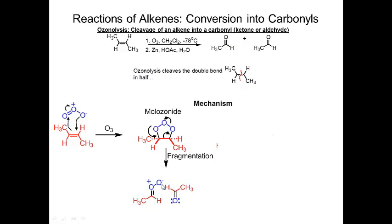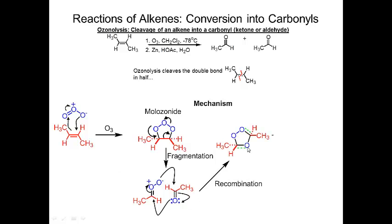These are two fragments, and then these fragments are going to react with one another. This oxygen attacks here, this oxygen attacks here, and this pi bond gets pushed to form a new cyclic intermediate. These green lines show where the pi bonds are going to be. This cyclic intermediate is what breaks down to give the two carbonyls.